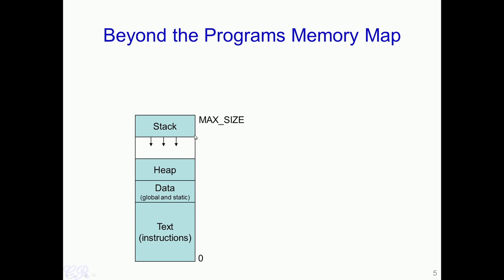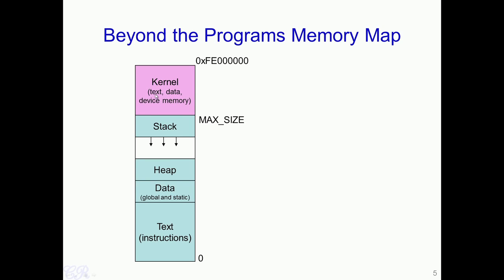What is present beyond this max size of the process? Typically, the kernel or the operating system gets mapped to the memory region from the max size to the maximum limit. The entire kernel — the instructions of the operating system, operating system data, the OS heap, and also device memory — gets mapped into this upper region of the OS.